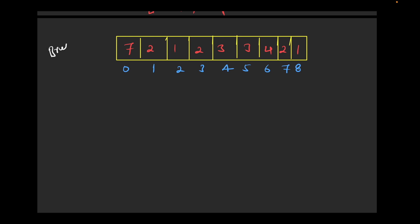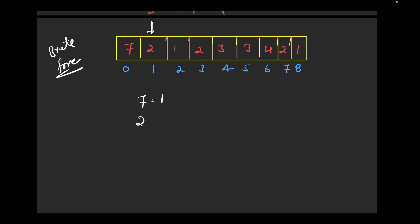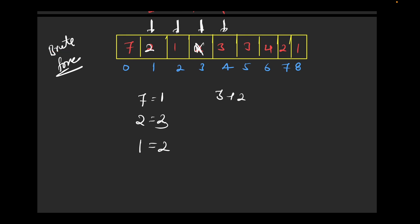Now let's start with the brute force solution. For each element, we count how many times it has occurred in the array. So if we're at 7, we count how many times 7 occurs — once. Then at 2, we count occurrences — 3 times. We skip elements we've already counted. This continues through 1, 3, and 4 using nested loops.